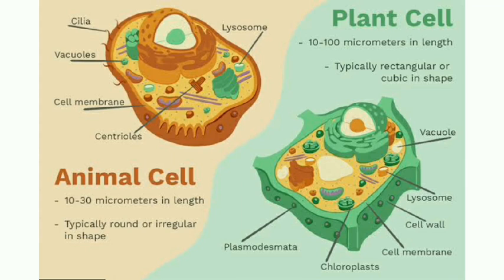The nucleus is eccentric in plant cells and centric in animal cells. In plant cells, food is reserved in the form of starch, while in animal cells it is reserved as glycogen. Spindle formation is anastral in plant cells and amphiastral in animal cells.